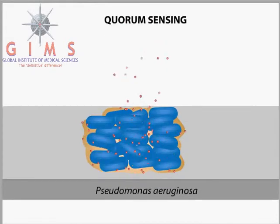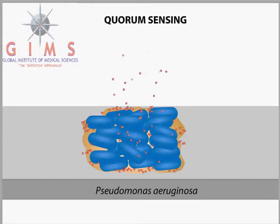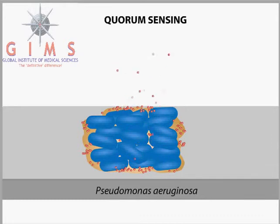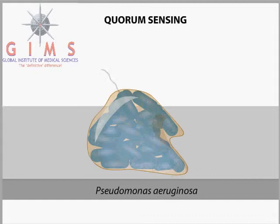These chemical signal molecules are continually made and secreted by individual cells. Once the population reaches a certain number, analogous to an organizational quorum, the chemical signal reaches a specific concentration that the cells can sense. This concentration triggers genetically regulated changes that cause cells to bind tenaciously to the substrate and to each other.